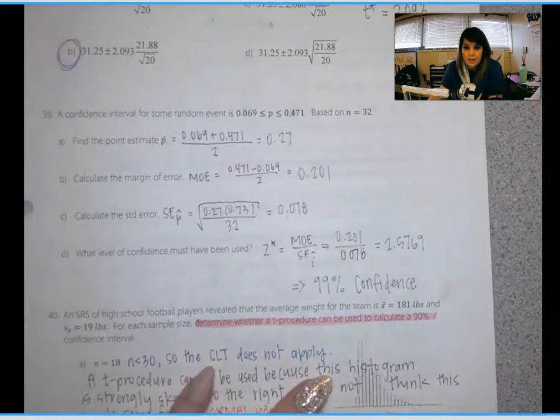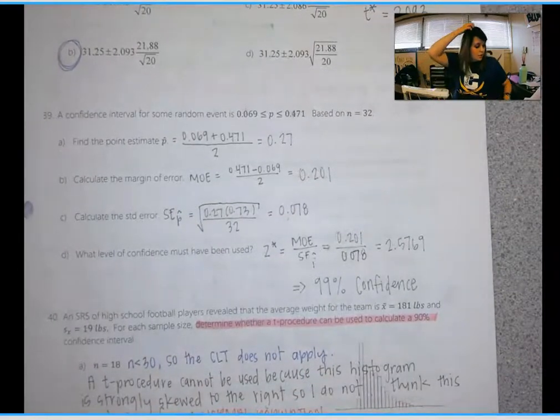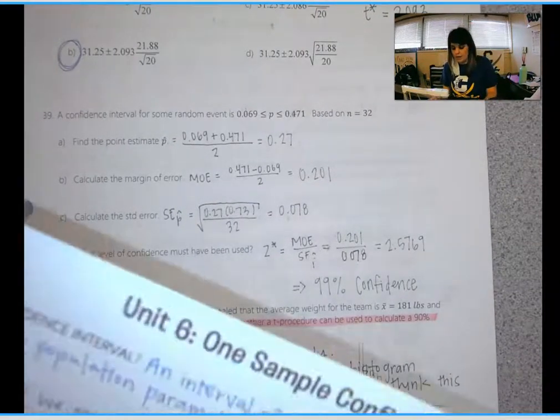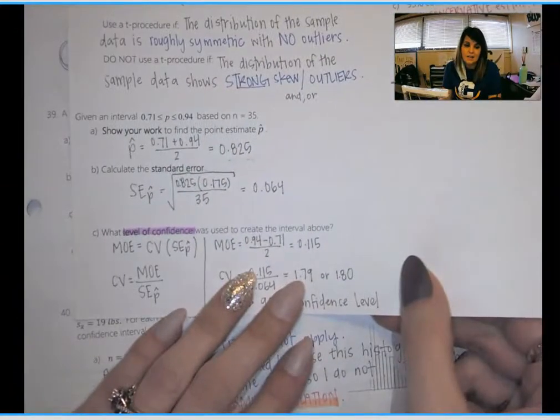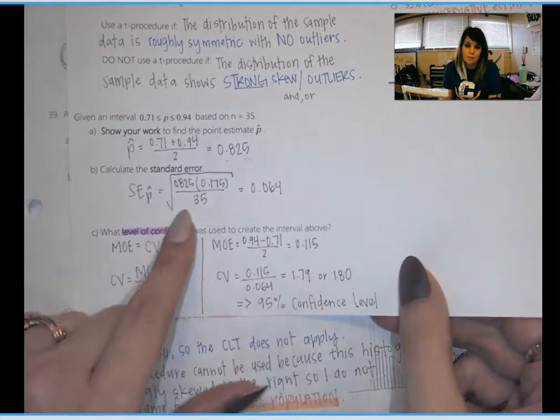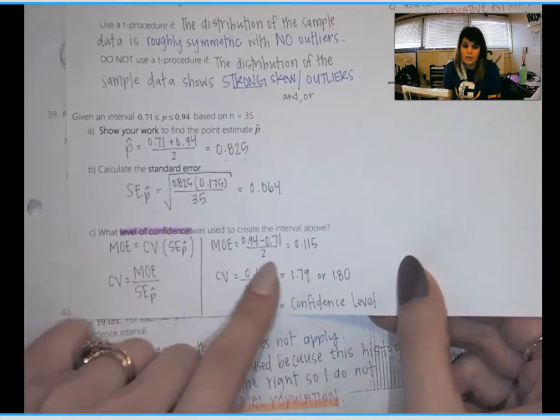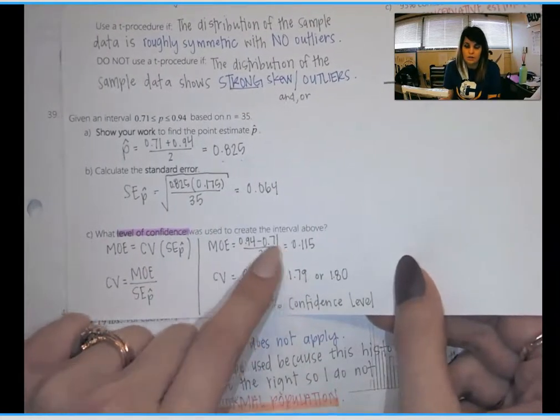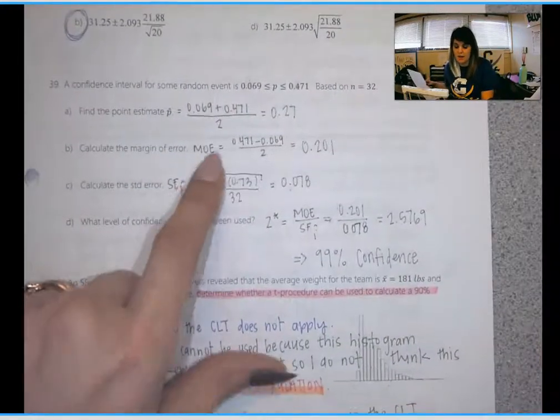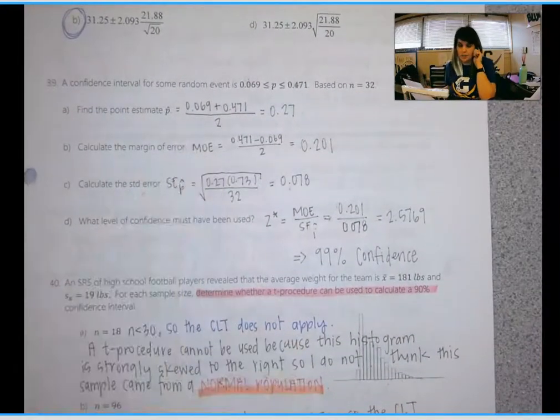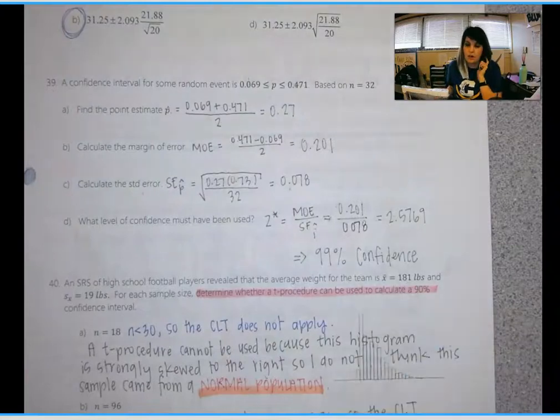So 39 is similar to what you did in your overview here. But I just added in the extra step of finding the margin of error. So here you had to know to find the margin of error. But on this paper, I added it in just to give you a little bit more help when you find your confidence level.